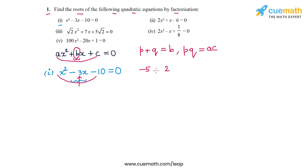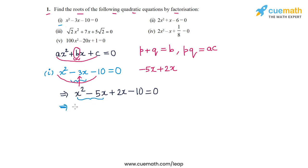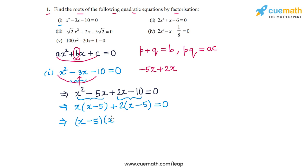We split the middle term -3x as -5x + 2x. So we get x² - 5x + 2x - 10 = 0. From the first pair of terms x² - 5x, we take out a common factor of x to get x(x - 5). From the second pair, we take out a common factor of 2 to get 2(x - 5). So the quadratic factorizes as (x - 5)(x + 2) = 0.